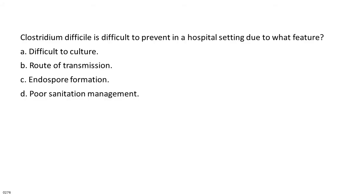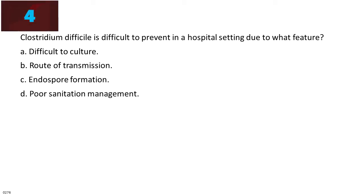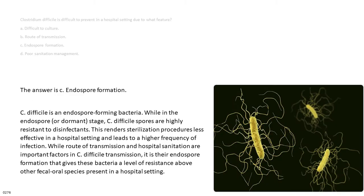Clostridium difficile is difficult to prevent in a hospital setting due to what feature? A. Difficult to culture. B. Route of transmission. C. Endospore formation. D. Poor sanitation management. The answer is C. Endospore formation. C. difficile is an endospore-forming bacteria. While in the endospore or dormant stage, C. difficile spores are highly resistant to disinfectants, rendering sterilization procedures less effective in a hospital setting and leading to a higher frequency of infection. While route of transmission and hospital sanitation are important factors, it is their endospore formation that gives these bacteria a level of resistance above other fecal-oral species present in a hospital setting.